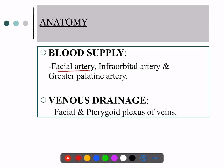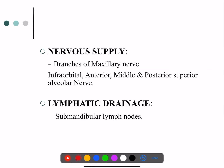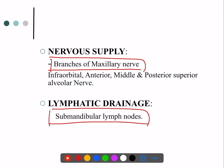Blood supply is via the facial artery, infraorbital artery, and greater palatine artery. Venous drainage is via the facial and pterygoid plexus veins. Nerve supply is mostly by branches of the maxillary nerve. Lymphatic drainage is via the submandibular lymph nodes — which is why in maxillary sinusitis you may see lymphadenopathy with tender swollen lymph nodes.